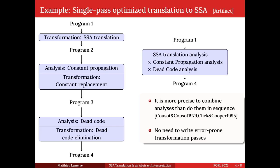What we propose instead is to do everything at the same time: the SSA translation analysis together with constant propagation and dead code analysis, letting the SSA translation pass do the modification of the source code automatically. This is beneficial because transformation passes that modify the AST are particularly error prone.